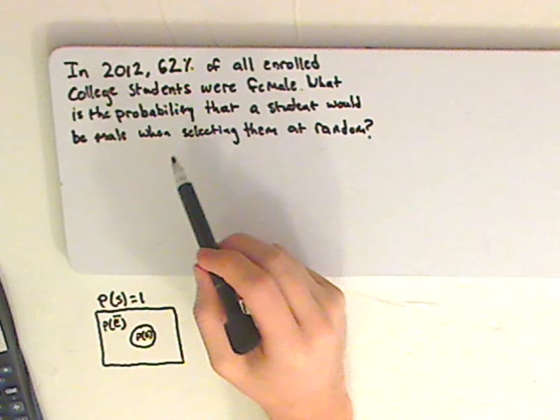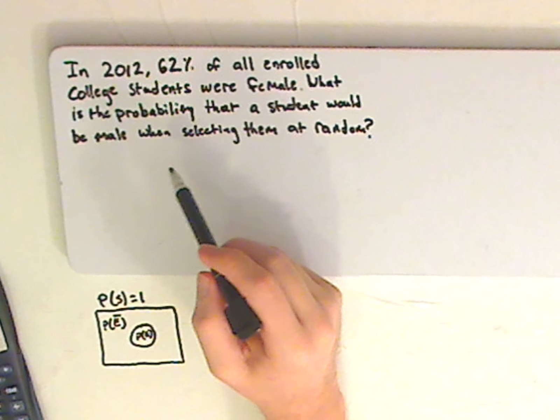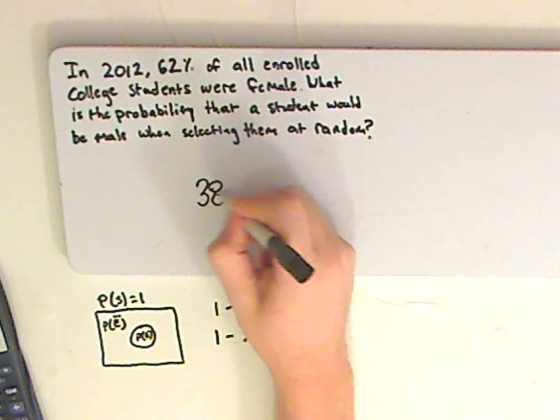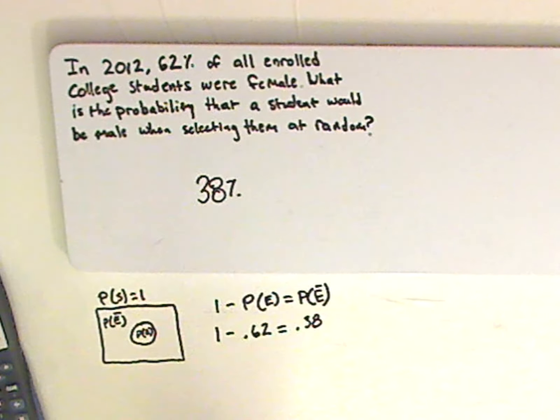So the probability of selecting a male at random would be 38%. And that's it.